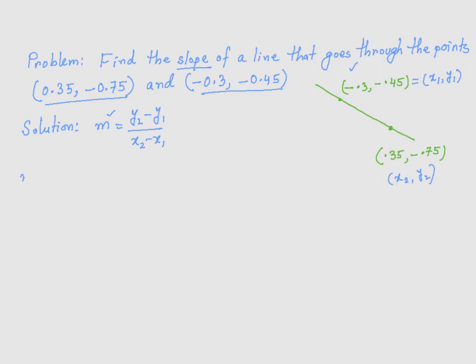Now, all I have to do is plug in these values into the slope formula. What is my y2, which is negative 0.75. Then minus, remember this minus is this minus from the formula, y1. What is my y1? This is my y1, negative 0.45.